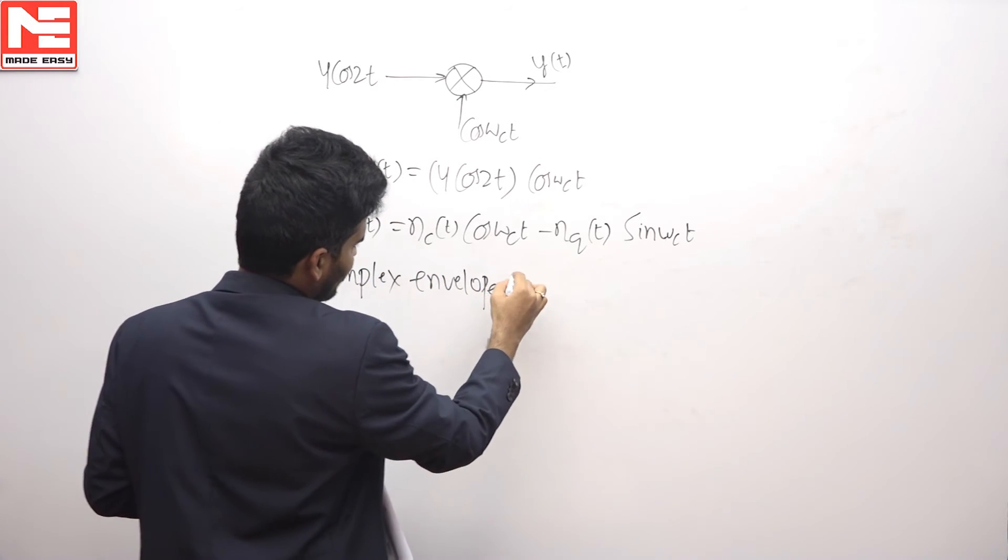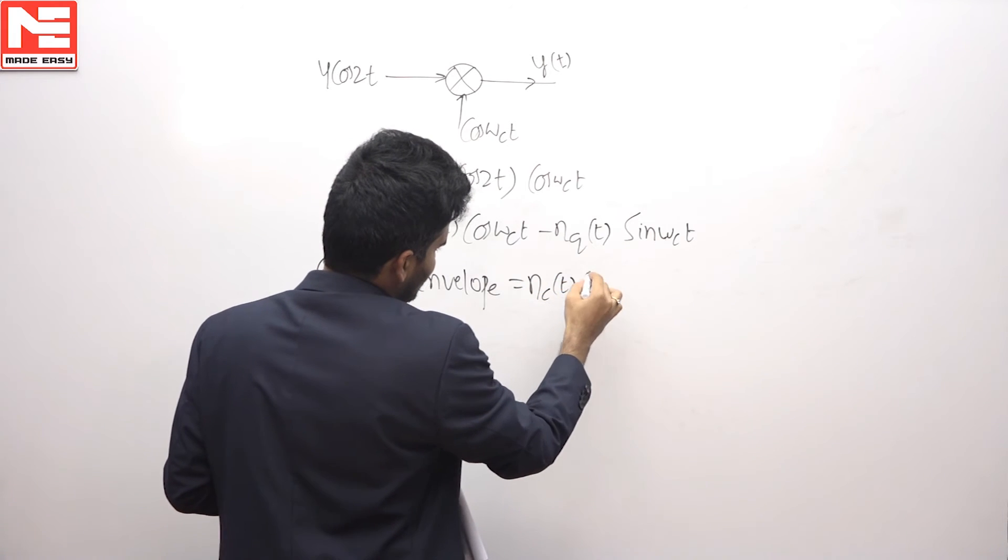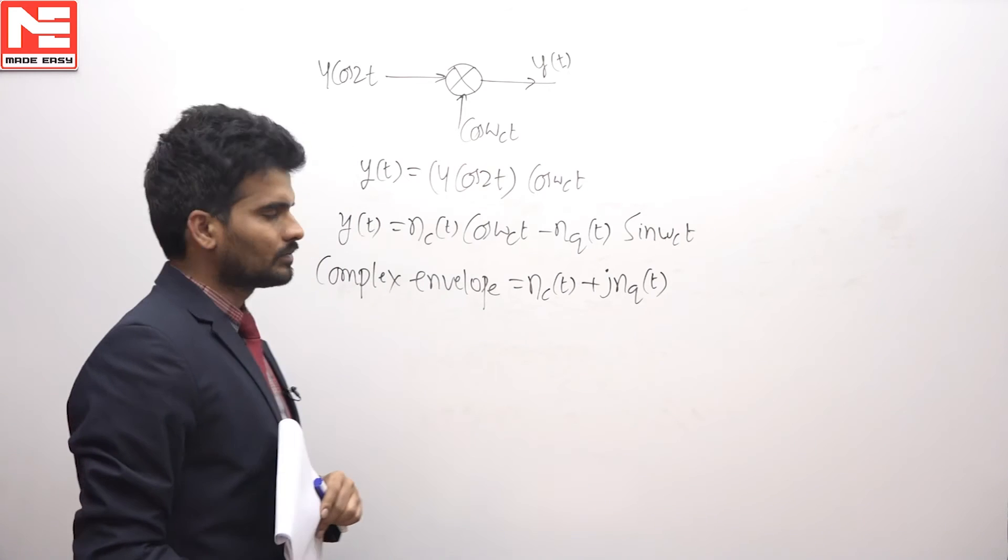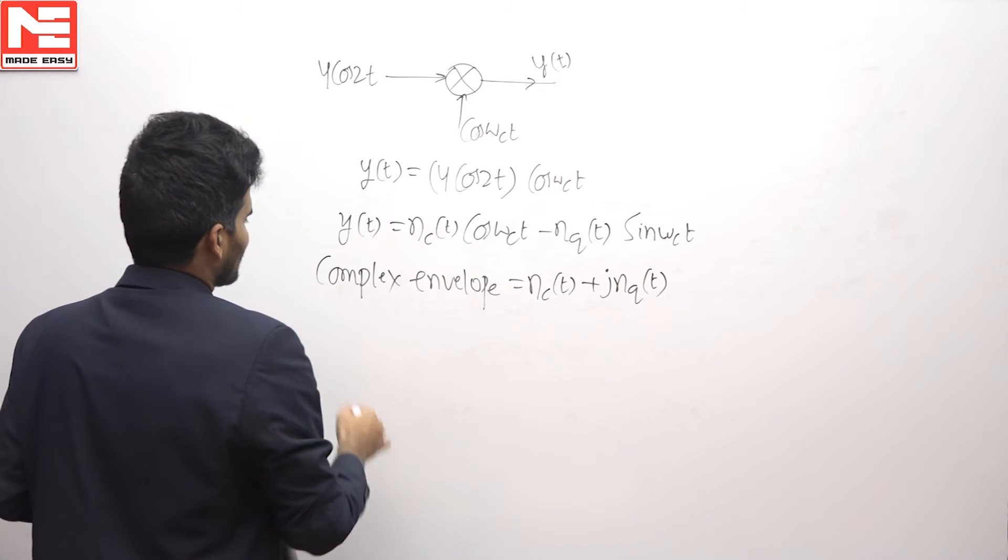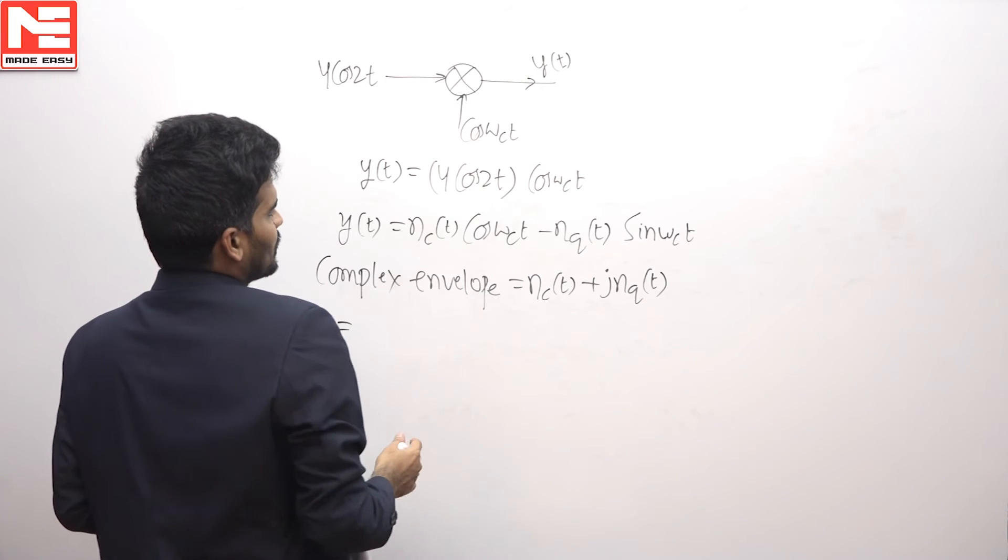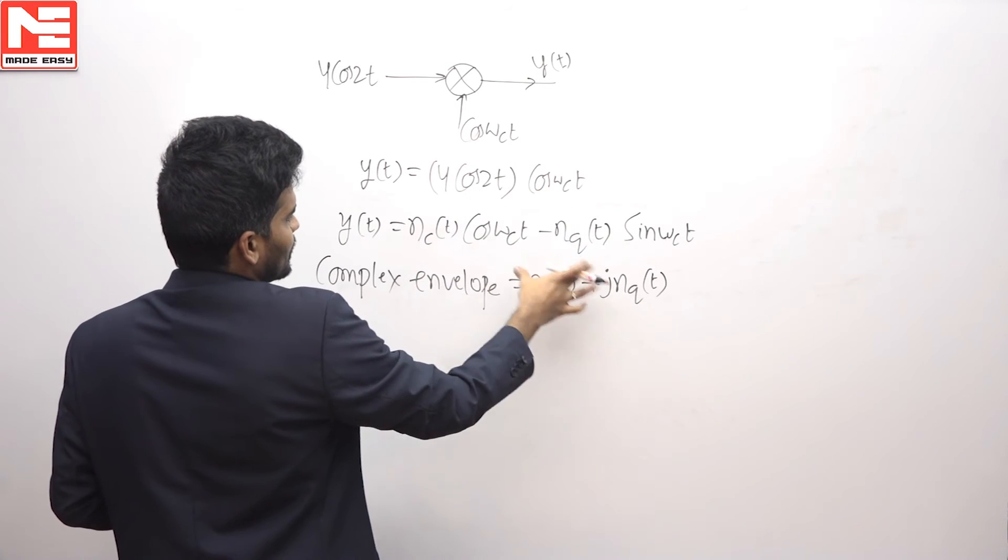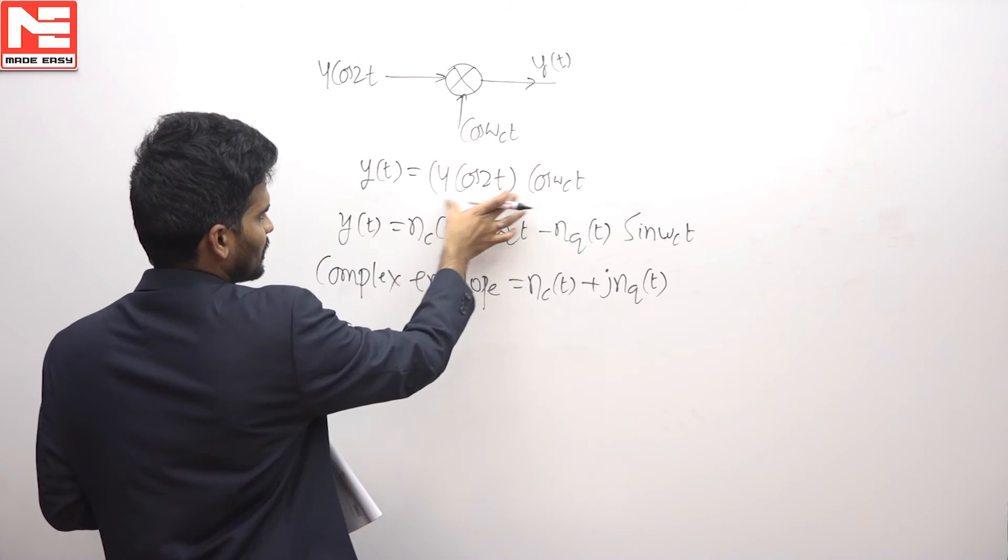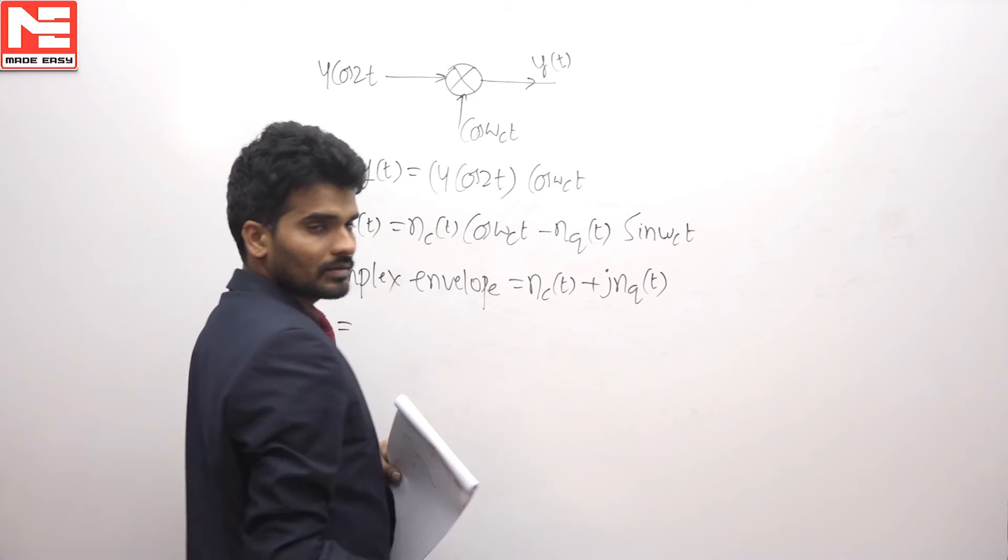Now the complex envelope will be found by comparing this y(t) with this standard result. It is in the form of nc(t) cos ωct. Here there are no sine terms.